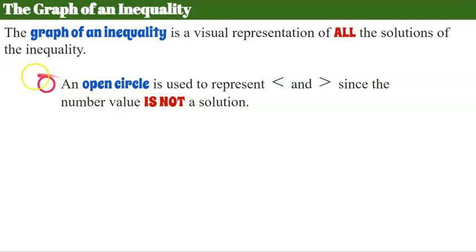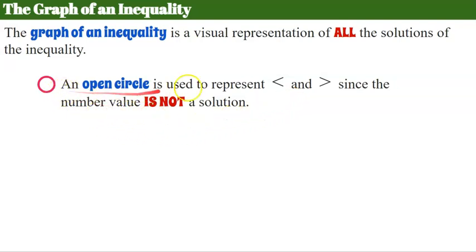When we graph an inequality, you could see an open circle — it's not shaded in, it's empty. This is used to represent less than and greater than, since the number is not a solution. When it's less than or greater than but not equal to that number, we put an open circle on the number line. Think of it as empty — not equal to that number.